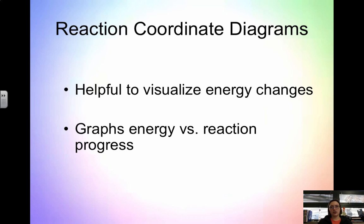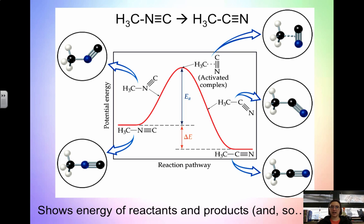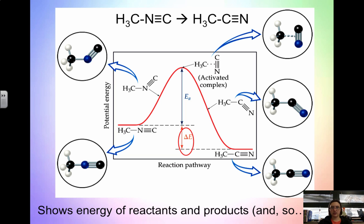When we look at activation energy, we look at what are called reaction coordinate diagrams. These are graphs that help us visualize energy changes by plotting energy versus the reaction progress. We have energy on the y-axis and reaction pathway on the x-axis. We start with our reactants, end with our products, and the diagram shows us the activation energy as the hill we need to get up and over. It also shows us the change in energy — delta E — which tells us if the reaction is exothermic or endothermic.